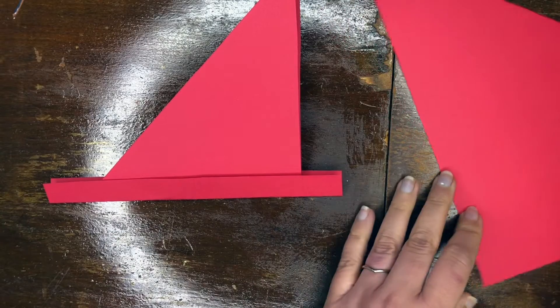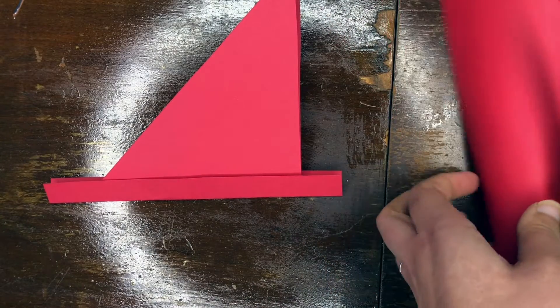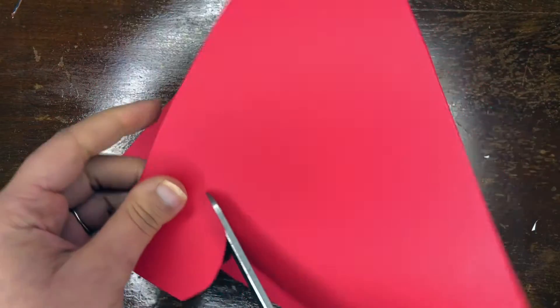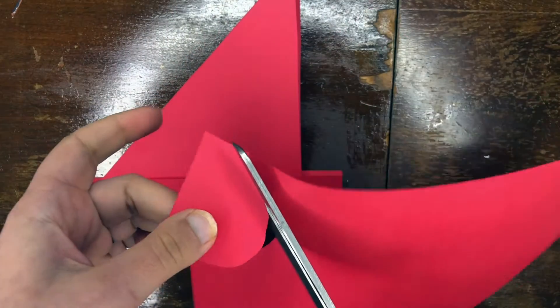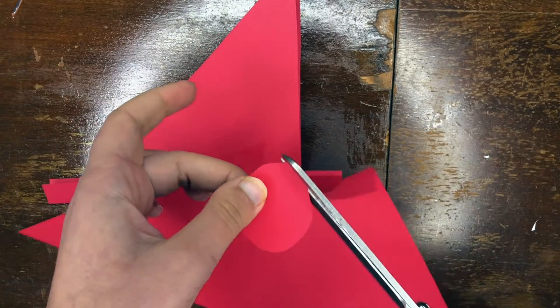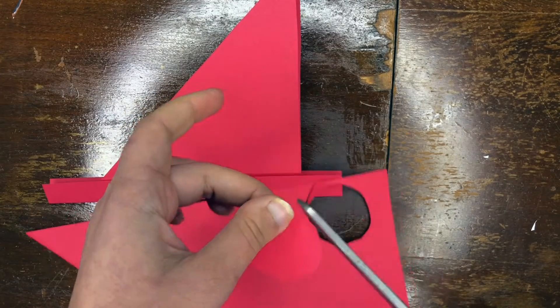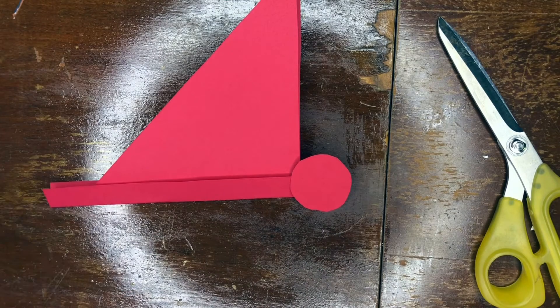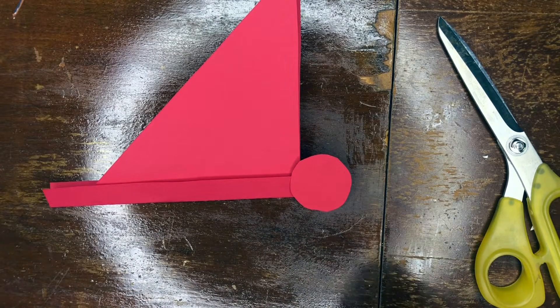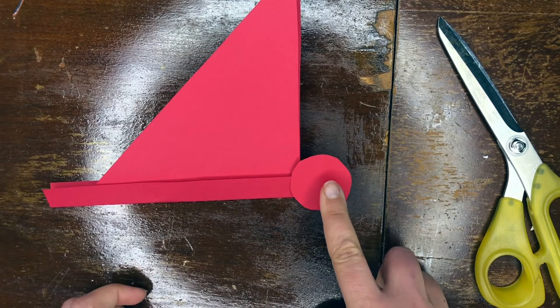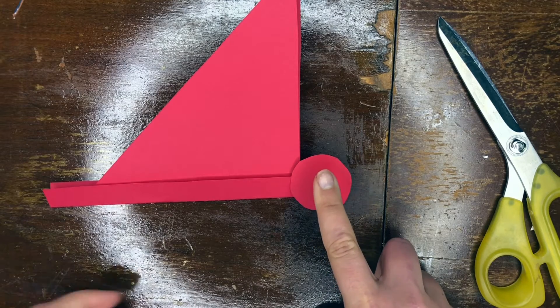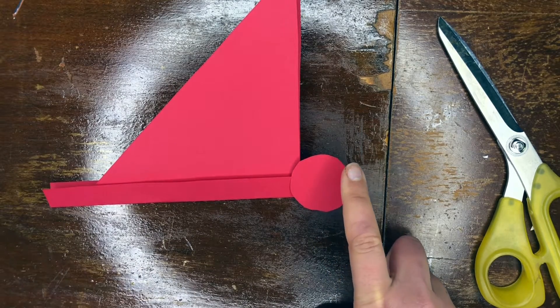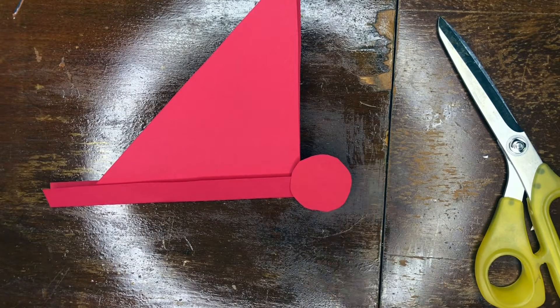So now we're going to cut out a circle for the head. And I'm just going to eyeball my circle, but you could trace one. And that's going to go right there. And we can either draw on a beak and eyes or we can put a googly eye, or if we have a little bit of orange paper, you can go ahead and do that as well.